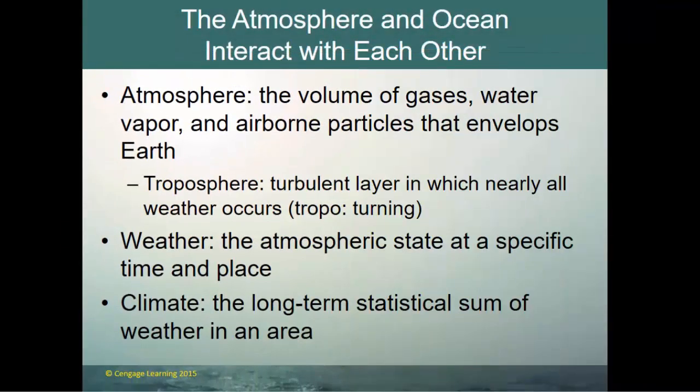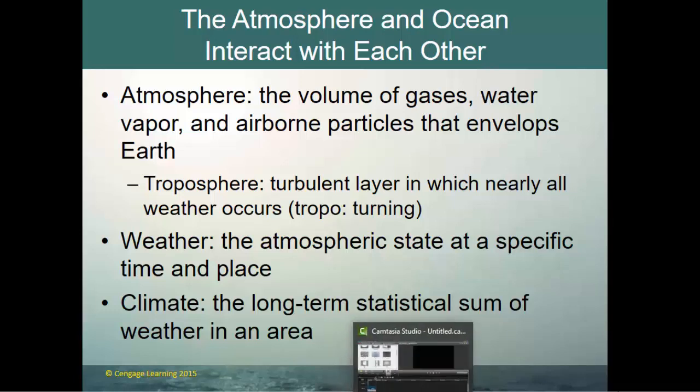The ocean and the atmosphere interact with one another. The atmosphere is the volume of gases, water vapor, and all airborne particulates that envelop the Earth. The troposphere is the very lowest layer of the atmosphere in which all actual weather occurs. It's called the troposphere because 'tropo' means turning — in this low-level layer, you have both upward and downward motion. Weather is the atmospheric state at a specific place and time, and climate is the long-term statistical sum of weather in an area.